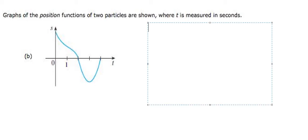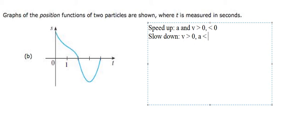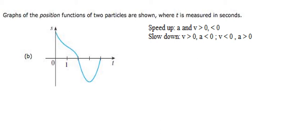About speeding up: A and V should be positive at the same time, or maybe negative at the same time. About slowing down: V is positive so A should be negative, or V should be negative so A should be positive. This is the technique to analyze.